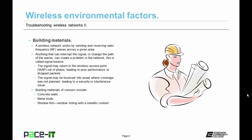The signal may return to the wireless access point out of phase, leading to poor performance or dropped packets. Alternatively, the signal may end up being bounced into areas where coverage was not planned, leading to a security issue or an interference issue with other wireless networks.